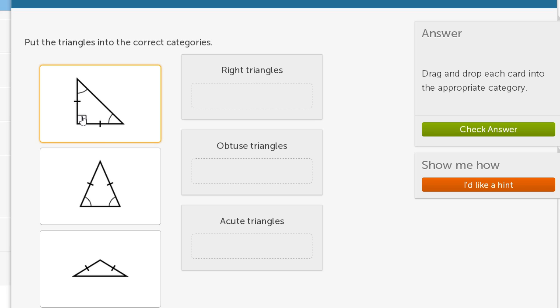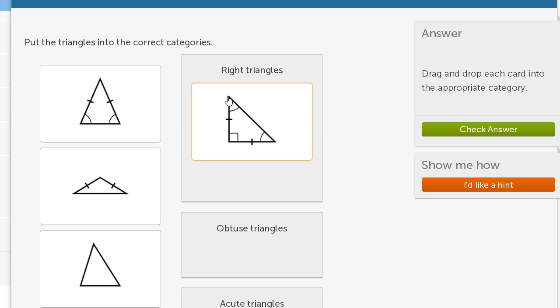So this one has a 90 degree angle. It has a right angle right over here. So this is a right triangle.